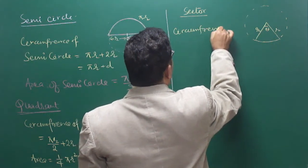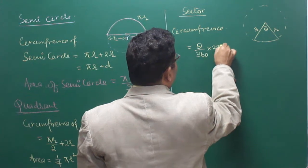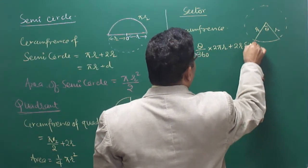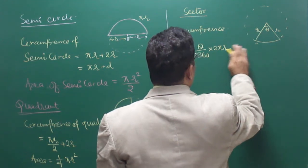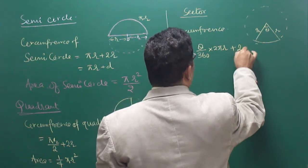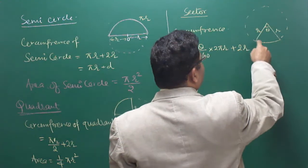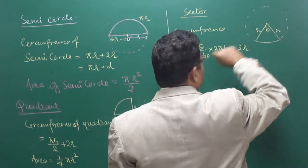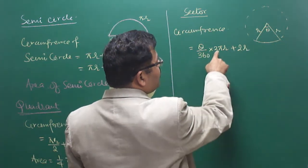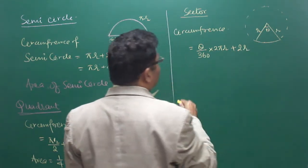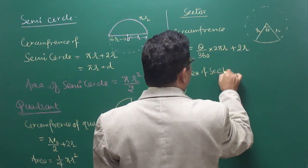The circumference of the sector is: theta upon 360 multiplied by 2πr, plus 2r. If it is in degree measure, circumference = (θ/360) × 2πr + 2r. And the area of the sector will be calculated as well.